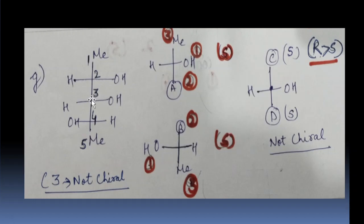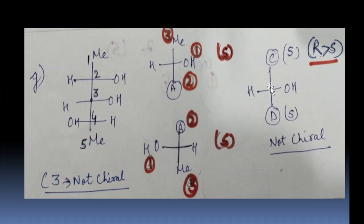Now going to the middle carbon, the 3rd carbon. We see H and OH here, and groups C and D. Group C has the same groups as D, and the configuration of C is S and the configuration of D is also S. When we have the same configurations and the same groups, we cannot consider this carbon as chiral — it is not stereogenic. However, if one were R and the other S, then R would take priority over S. We will discuss that in the next example.